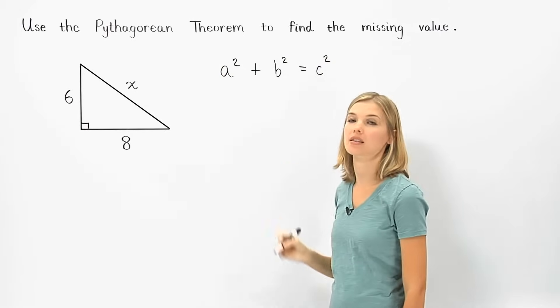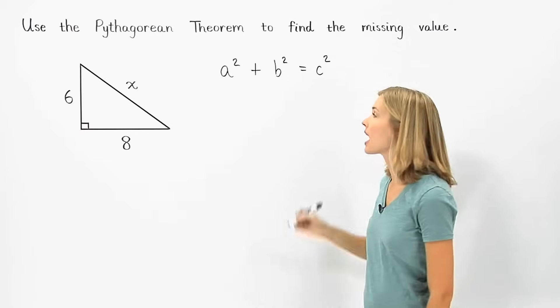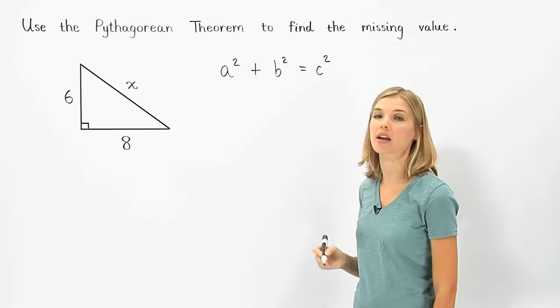Where a and b are the lengths of the legs of the right triangle, and c is the length of the hypotenuse.